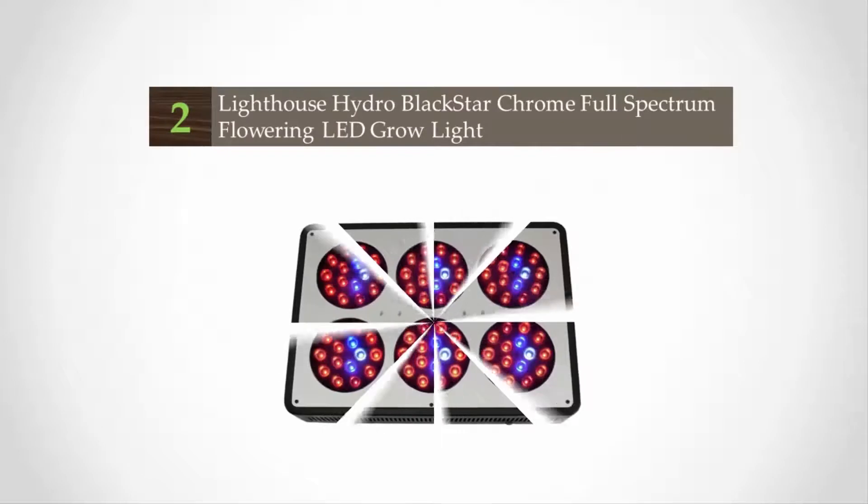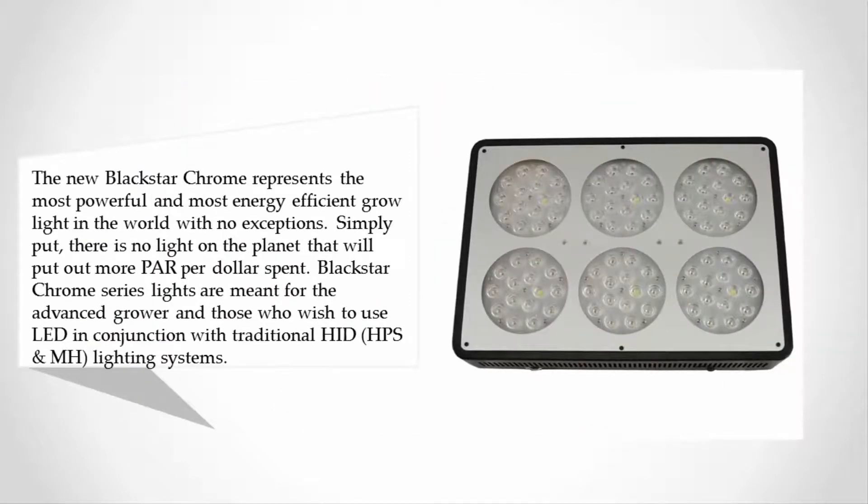At number 2, the new Black Star Chrome represents the most powerful and most energy efficient grow light in the world with no exceptions. Simply put, there is no light on the planet that will put out more PAR per dollar spent. Black Star Chrome series lights are meant for the advanced grower and those who wish to use LED in conjunction with traditional HID, HPS, and MH lighting systems.